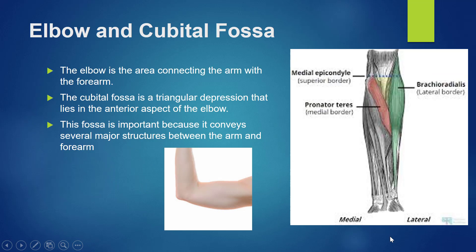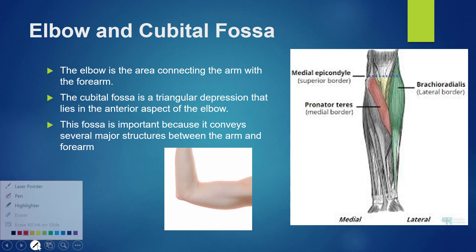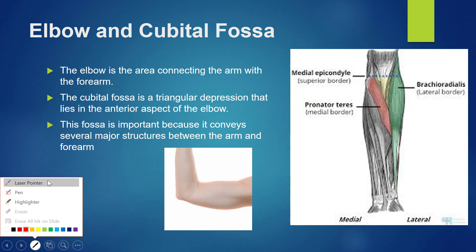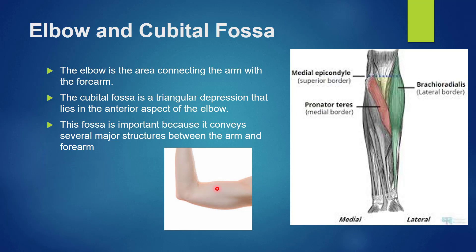The elbow is the area connecting the arm with the forearm. In this diagram you can see the arm and the forearm which is connected at the elbow joint — this is the cubital region. The cubital fossa is a triangular depression that lies in the anterior aspect of the elbow.